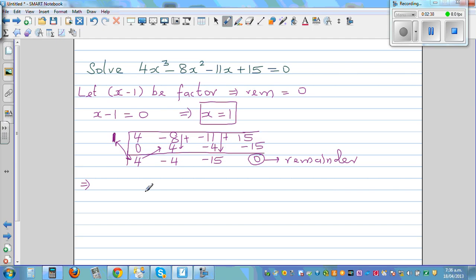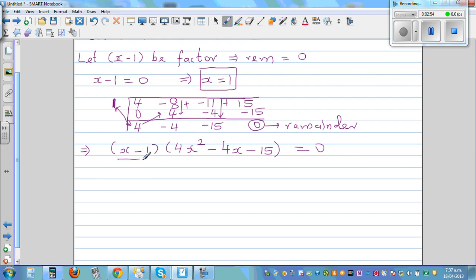So this implies this equation changes to x minus 1 times 4x squared minus 4x minus 15 is equal to 0. So now you can set this equal to 0 and this equal to 0. We can say x minus 1 equal to 0, and you can also say 4x squared minus 4x minus 15 is equal to 0. So x is equal to 1.